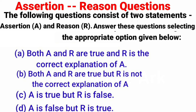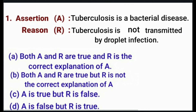Assertion-Reason questions: Each question has two statements — Assertion and Reason. Option A: Both assertion and reason are true, and reason is the correct explanation of assertion. Option B: Both are true, but reason is not the correct explanation. Option C: Assertion is true but reason is false. Option D: Assertion is false but reason is true. Question 1 — Assertion: Tuberculosis is a bacterial disease. Reason: Tuberculosis is not transmitted by droplet infection. Answer: Option C — Assertion is true but reason is false, because tuberculosis is mainly transmitted by droplet infection.